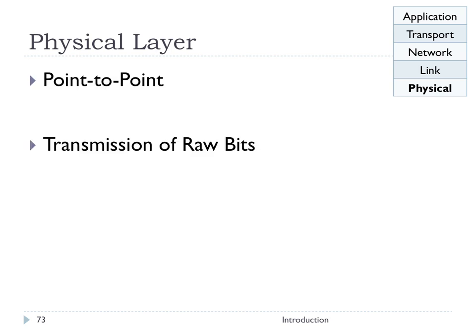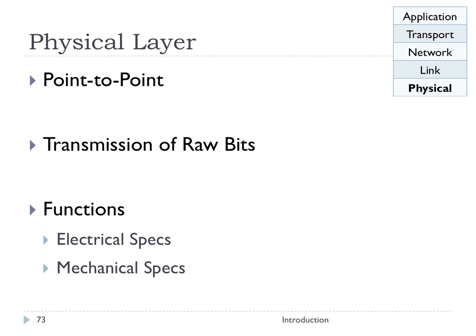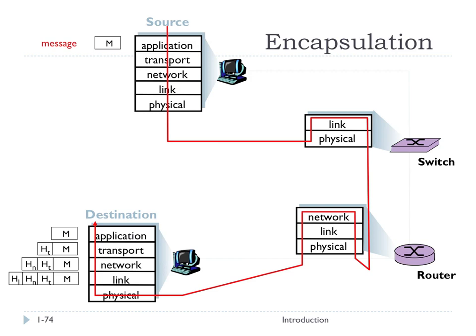The physical layer is also point-to-point. It's about transmission of raw bits from node to node over fiber, twisted pair, or electromagnetic waves in a wireless environment. It deals with electrical and mechanical specifications — this is electrical engineering, so as computer scientists we won't focus on it in this class.